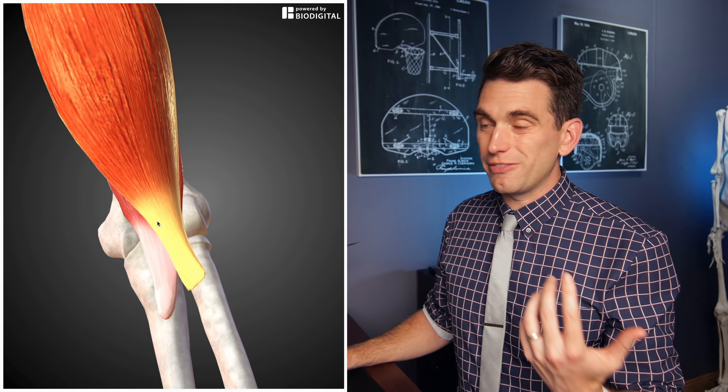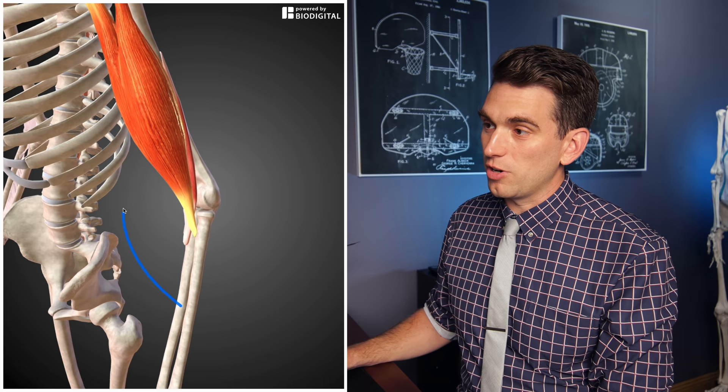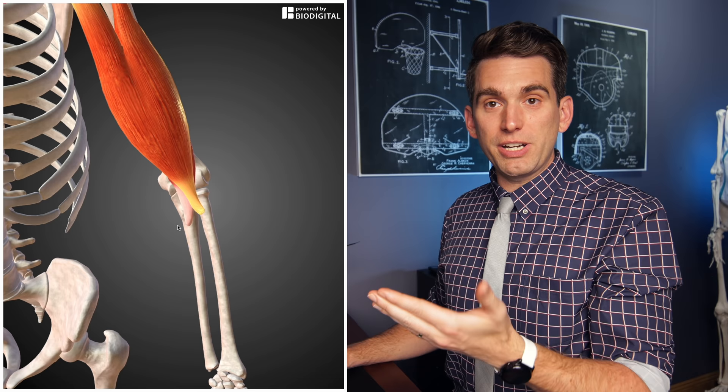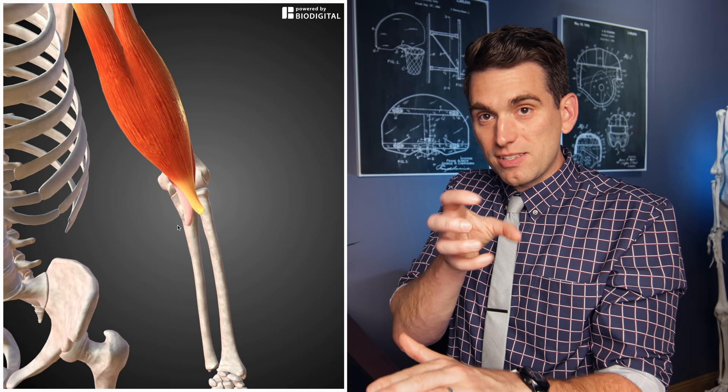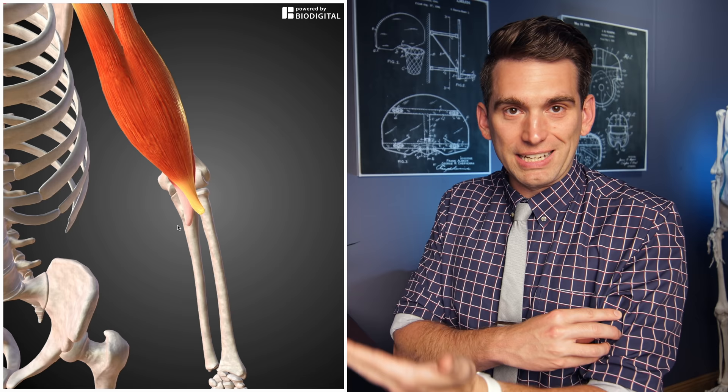The function of the biceps: number one is to flex or bend the elbow upwards — think of it like a pulley or a rope, when you contract this muscle, you swing the forearm upward into flexion. But the other really crucial role of the biceps is with pronation and supination. If you bend your elbow to 90 degrees and turn your palm down, that's pronation; if you turn it up, that's supination. What's happening is that the radius is actually spinning up in the elbow to allow your forearm to rotate. The primary muscle when your elbow is bent that causes supination is the biceps. Try it — put your palm down, hold on to your biceps muscle, turn your palm up, and sure enough you'll feel your biceps contract.